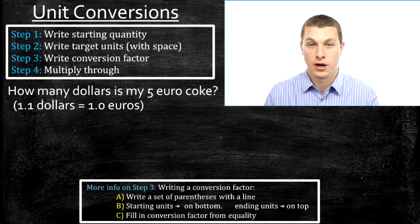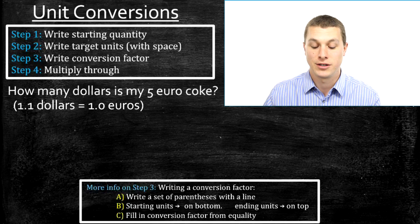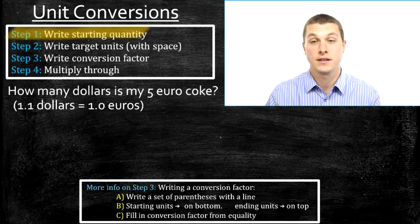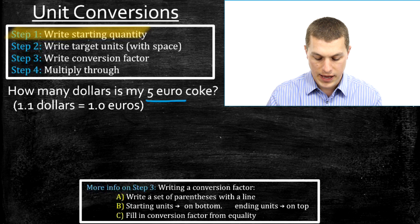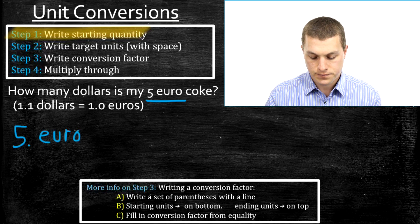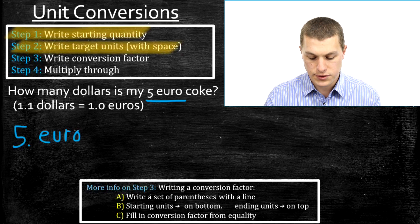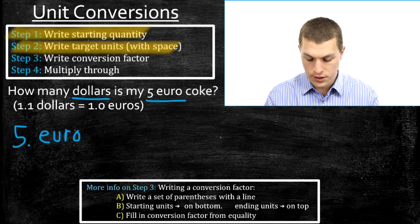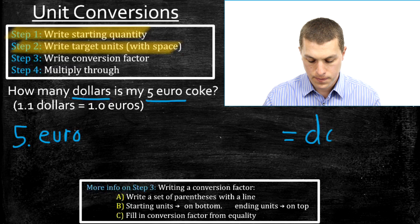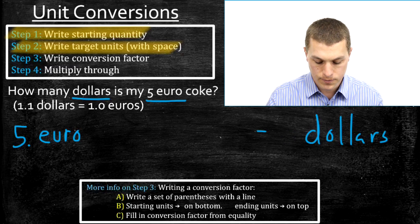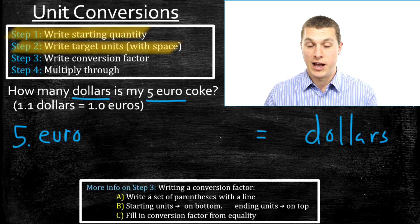Now we want to know how many dollars a five euro Coke costs. If you've been to Europe and bought a Coke, you know they're extremely overpriced, and you might wonder how many dollars that five euros actually is. Step one: write our starting quantity, which is five euros. Step two: write our target units with a space — what we want to get to is dollars. So we write dollars on the other side, leaving a space after the equal sign for our answer. Five euros equals how many dollars — that's our problem set up.